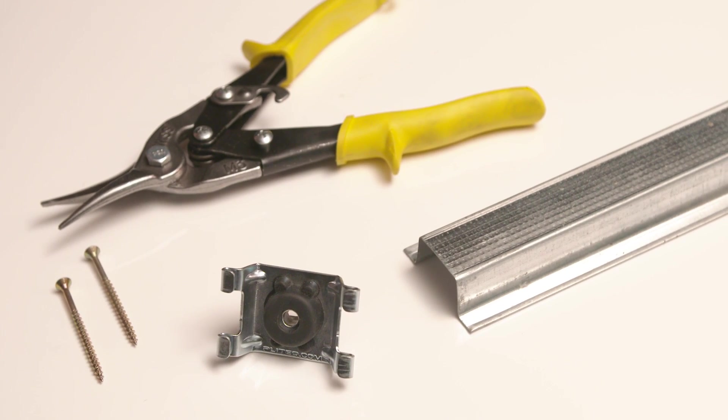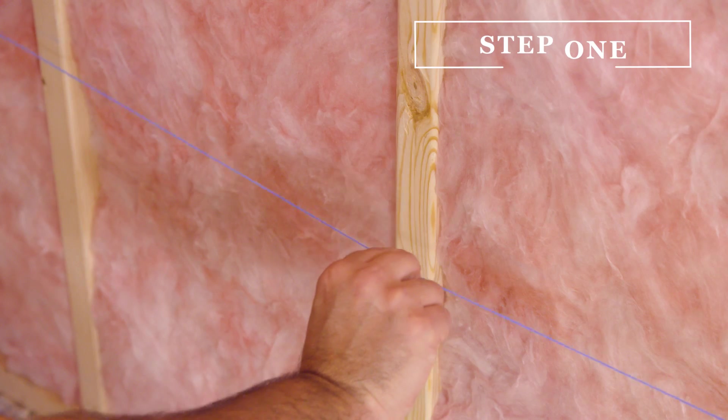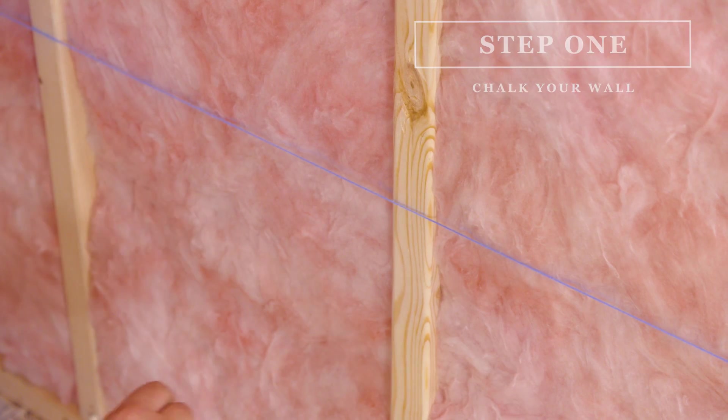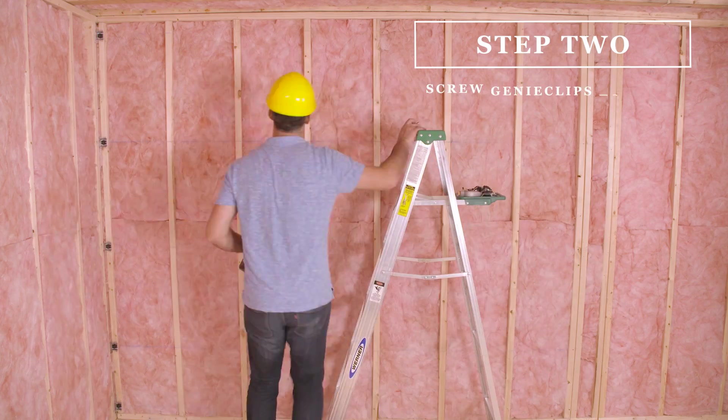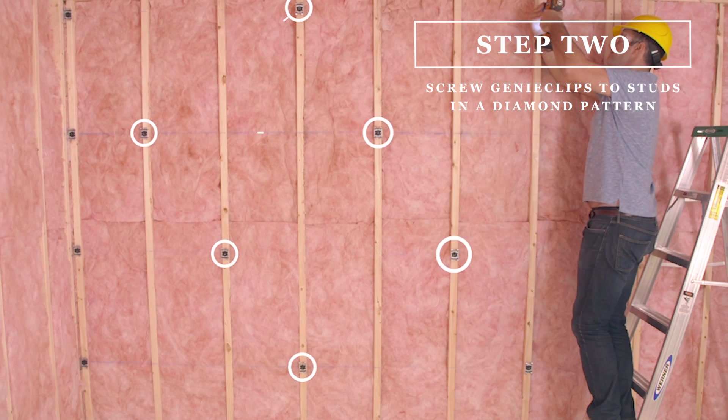The Genie Clip achieves consistent results with its foolproof installation process, completed in three steps. First, chalk your wall to map the location of the furring channel rows. Second, screw the Genie Clips to the studs in a diamond pattern.